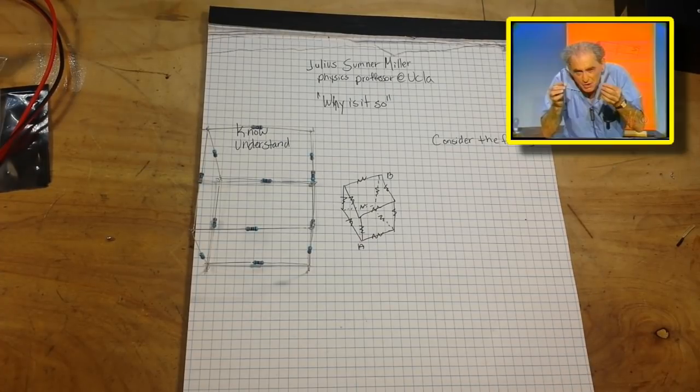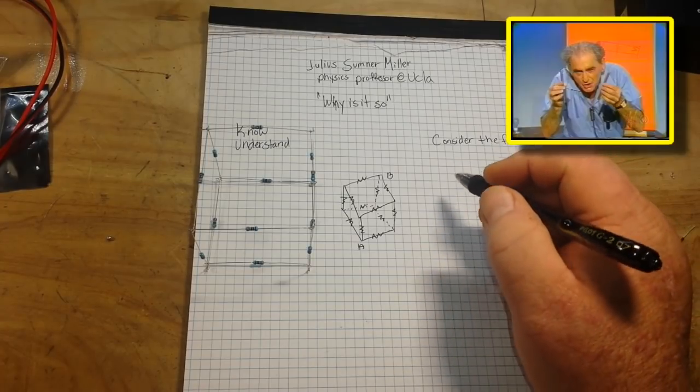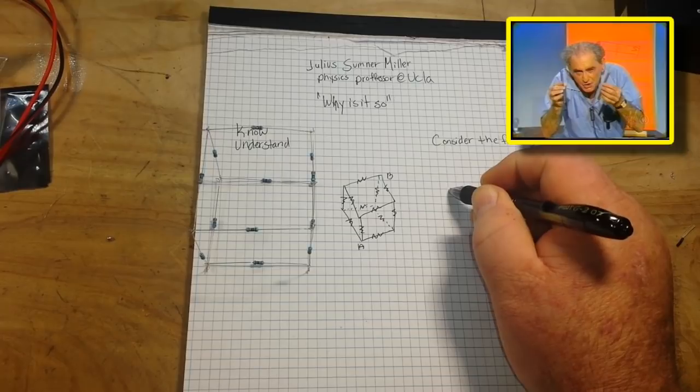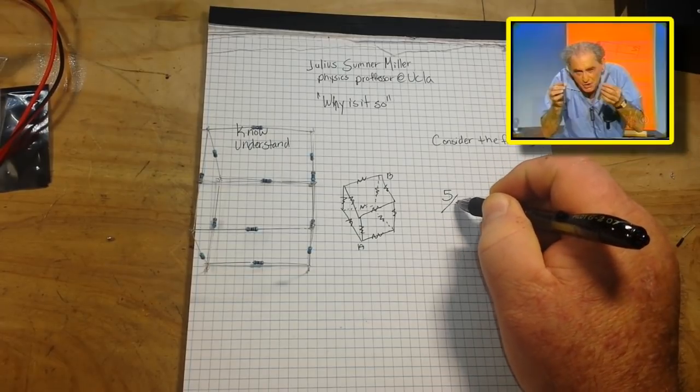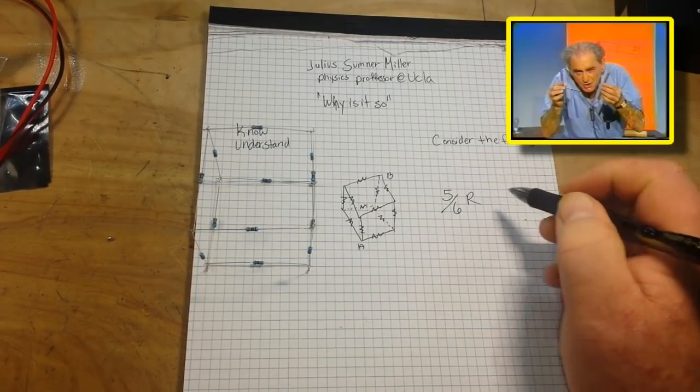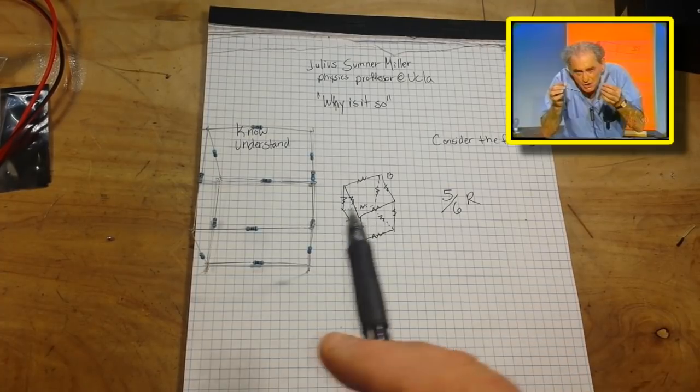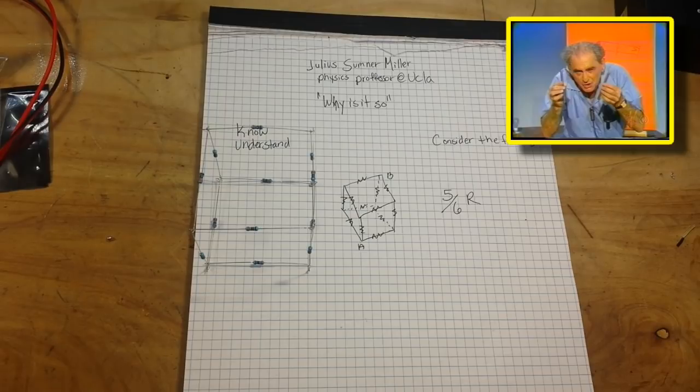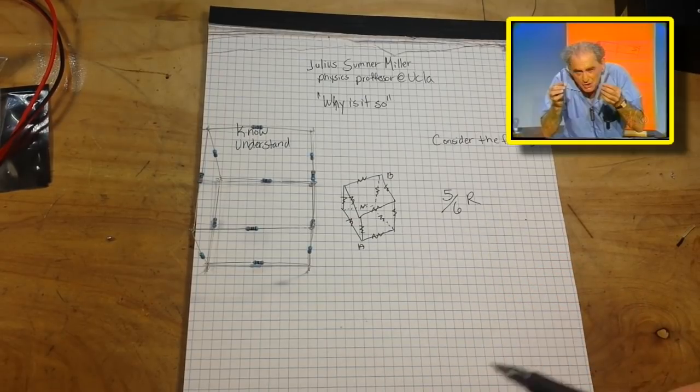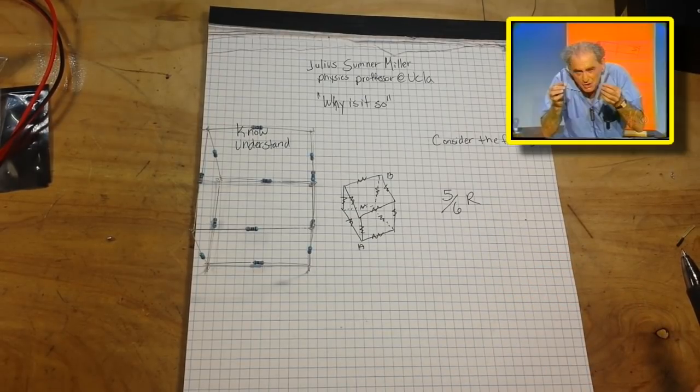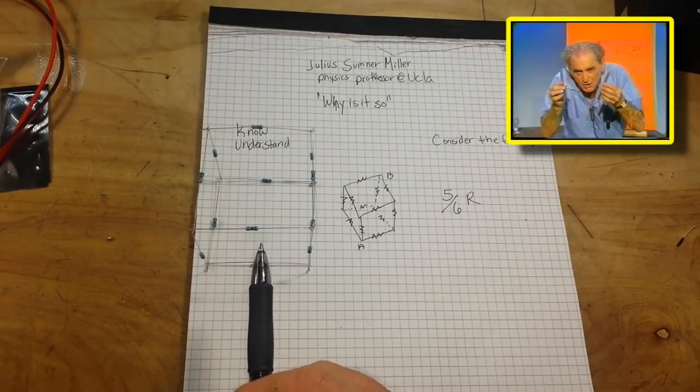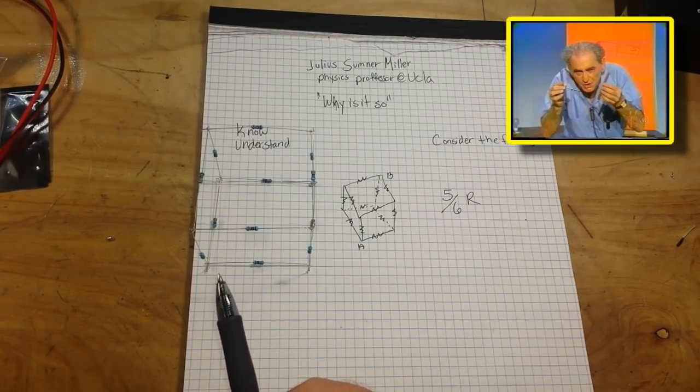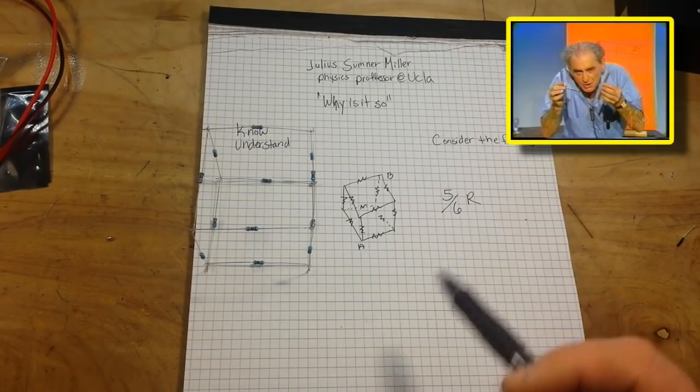But I'm going to give you the answer. The answer is 5/6 R. So, considering all of the resistors are of the same value R, the answer is 5/6 R. So if these are one ohm resistors, then the answer is 5/6 of an ohm. Crazy, isn't it?